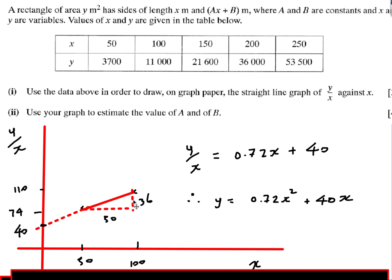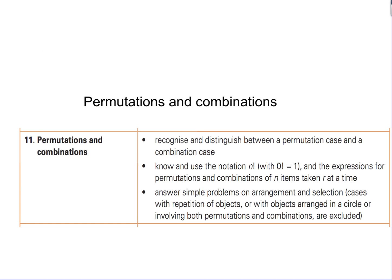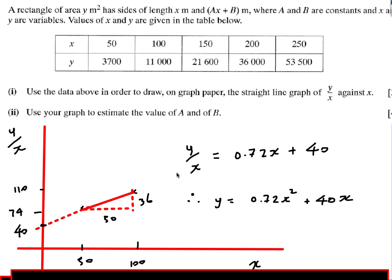The gradient is 36 over 50, which is 0.72. So the equation is: y/x equals 0.72 times x plus 40, where y/x is the y-axis variable, 0.72 is the gradient, x is the x-axis variable, and 40 is the y-intercept. To convert this to a normal equation, multiply everything by x, giving y equals 0.72x squared plus 40x. That's the first part of the question.